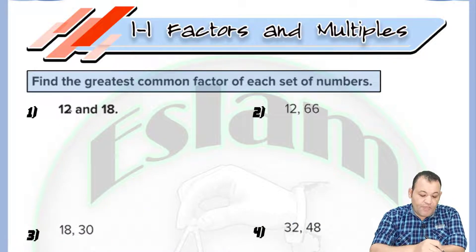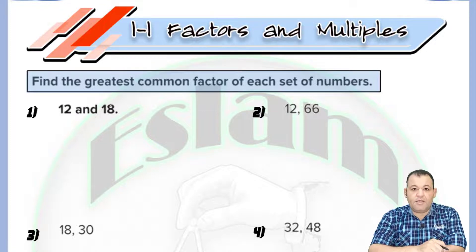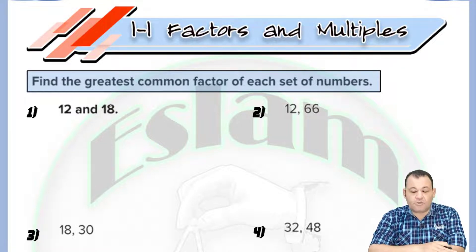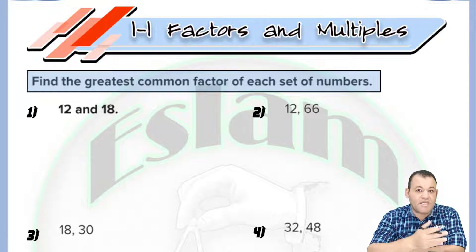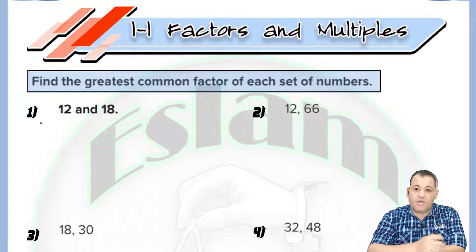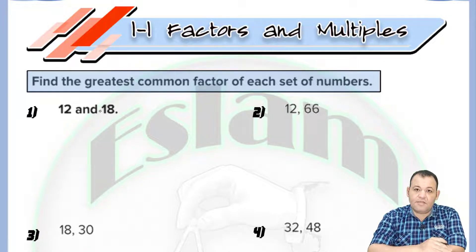If we need to find the greatest common factor for 12 and 18, what is the meaning of the greatest common factor? For example, if 8 equals 2 times 4, we can say that 2 and 4 are called the factors of 8. So we need to find the greatest common factor of 12 and 18.